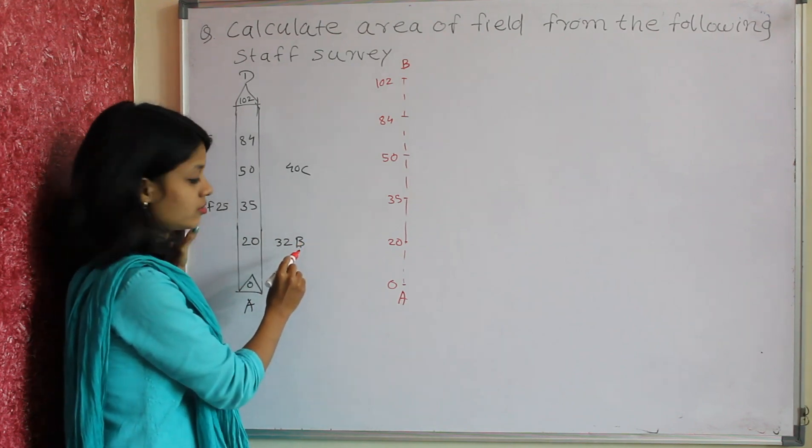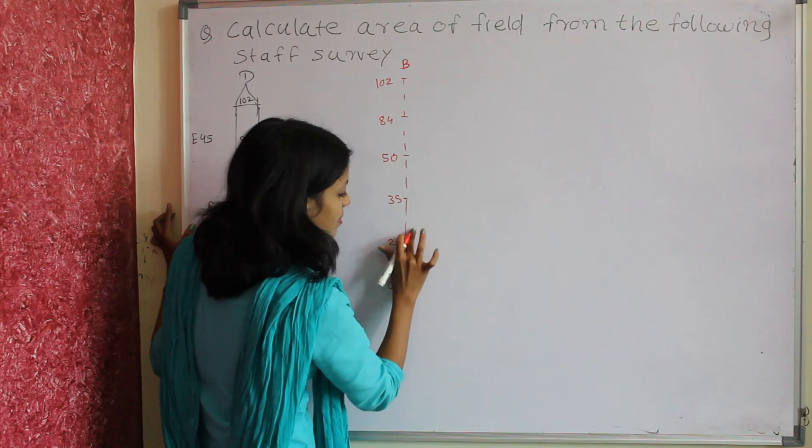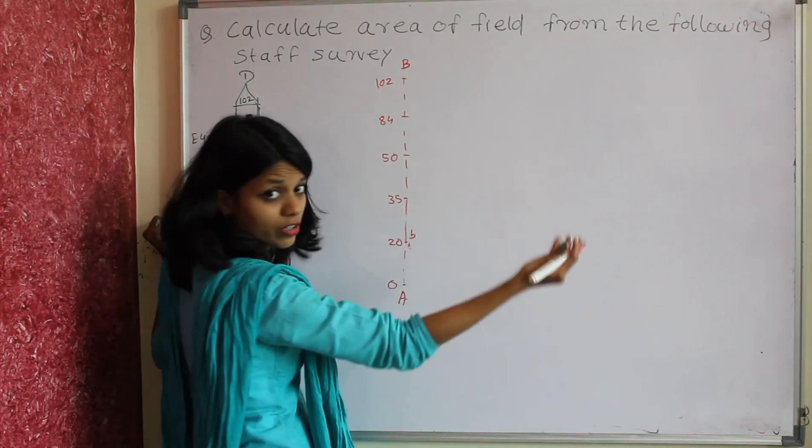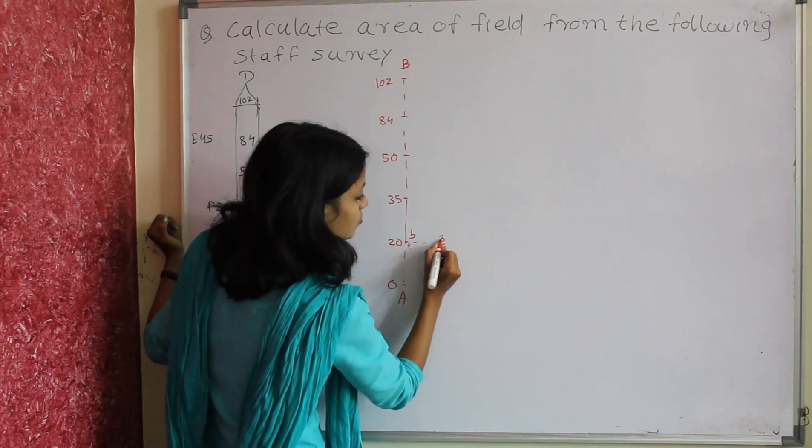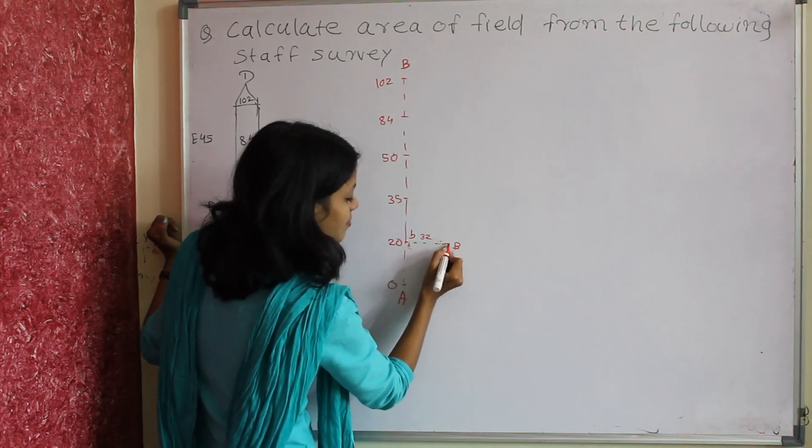At point B, the offset is 32 meters on the right hand side.